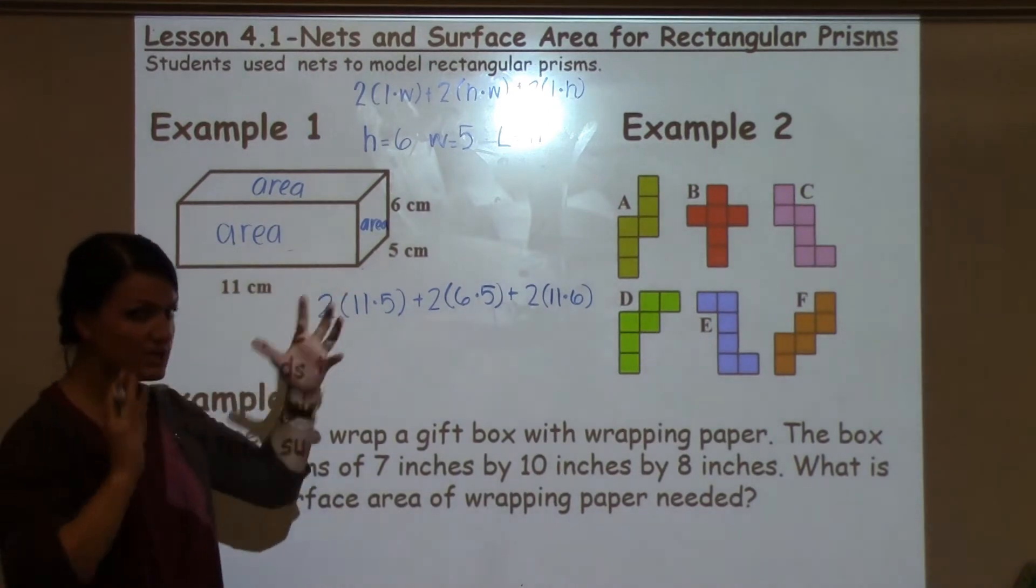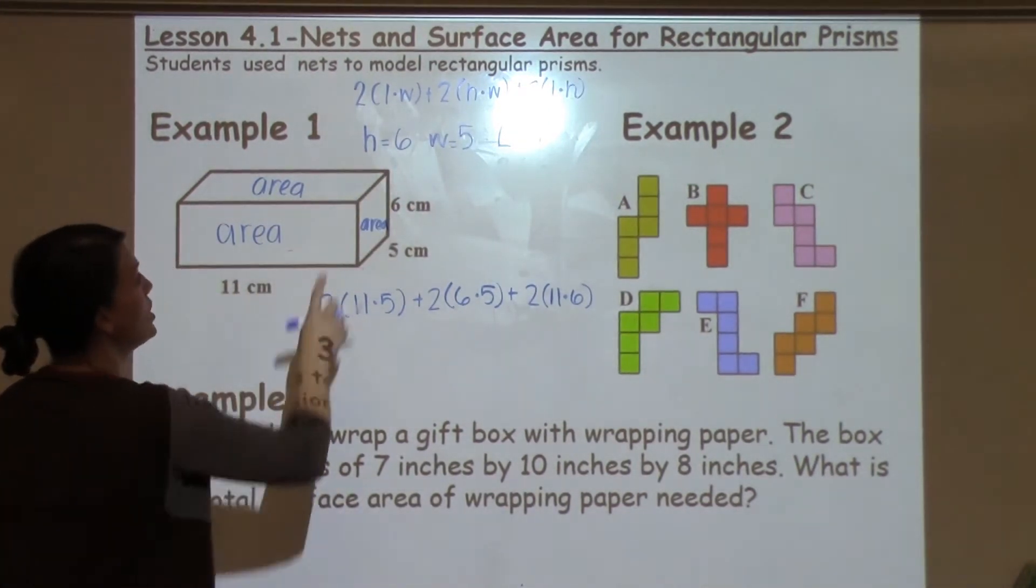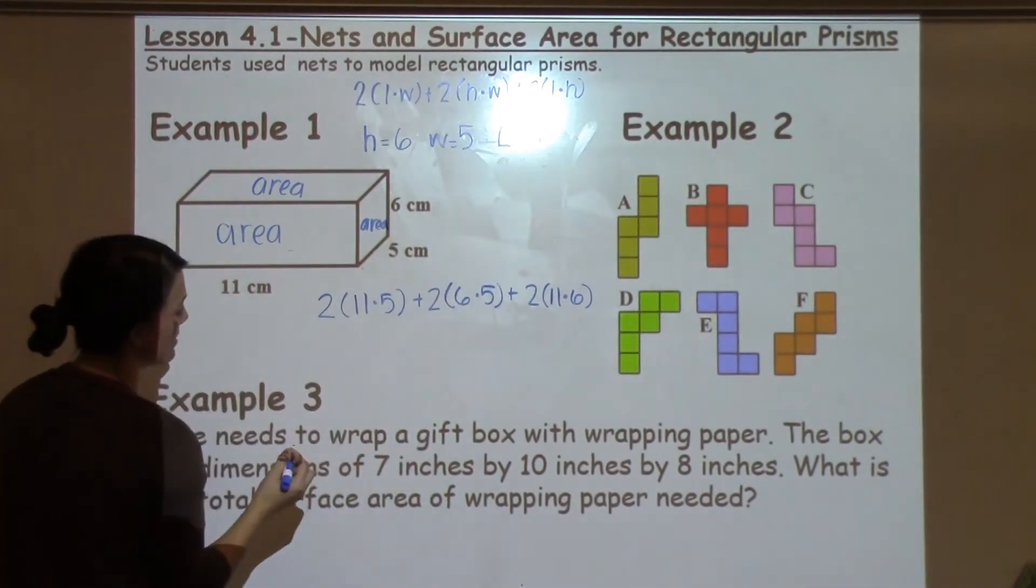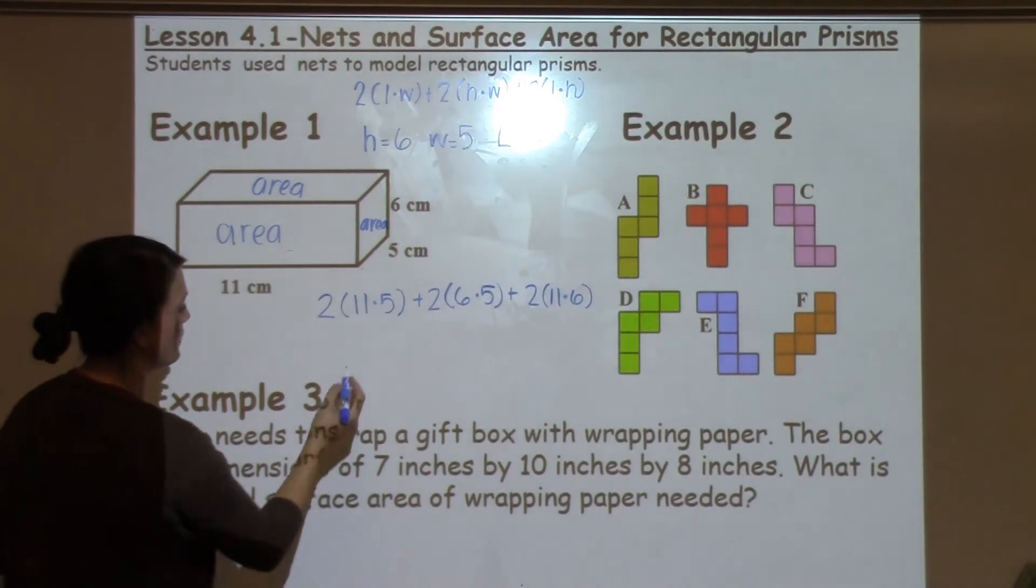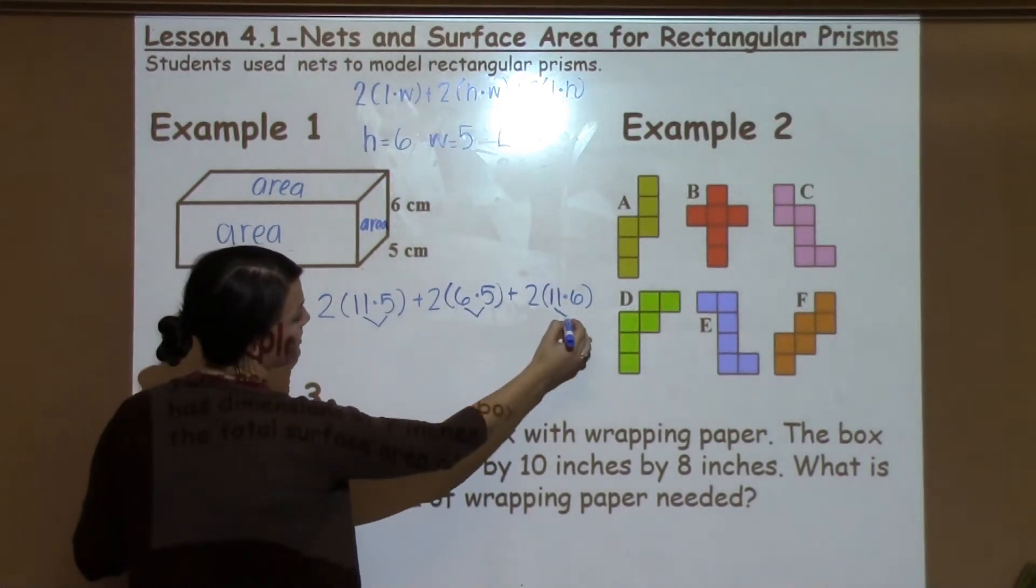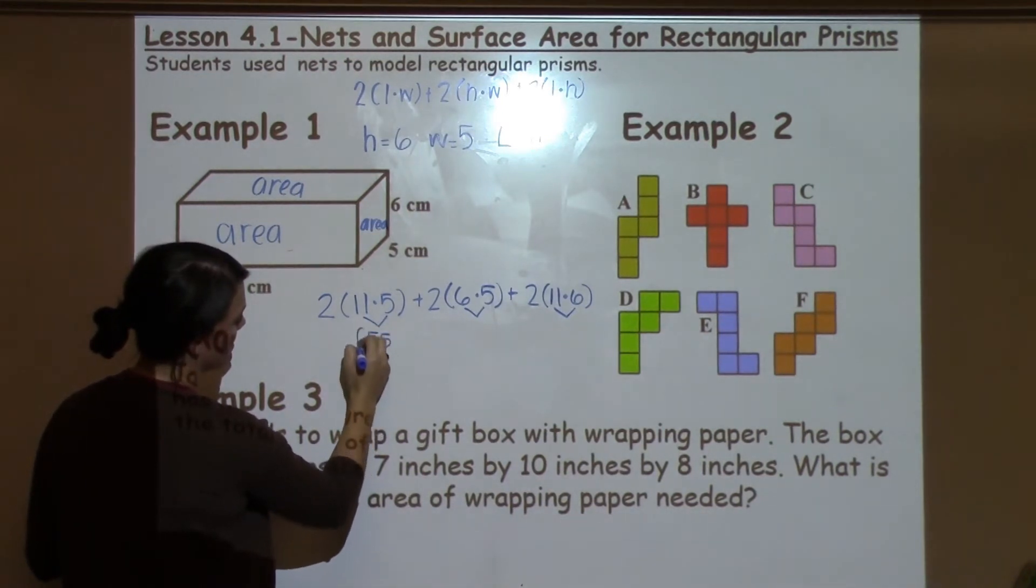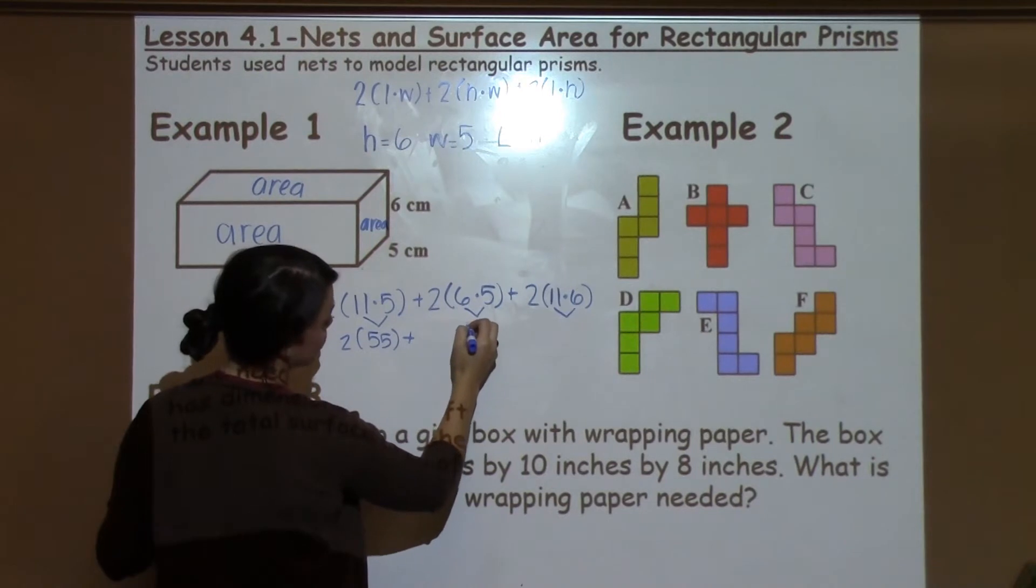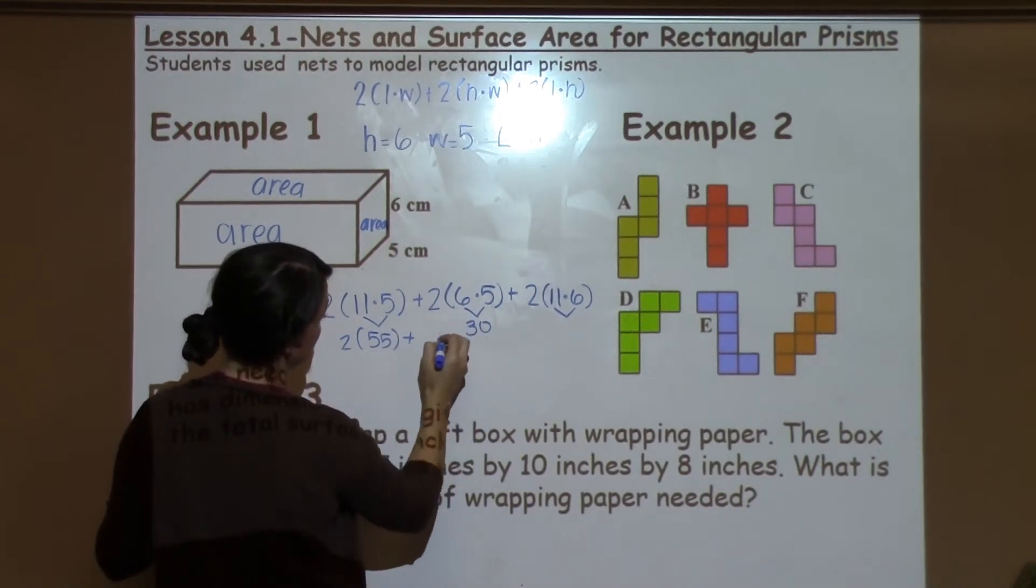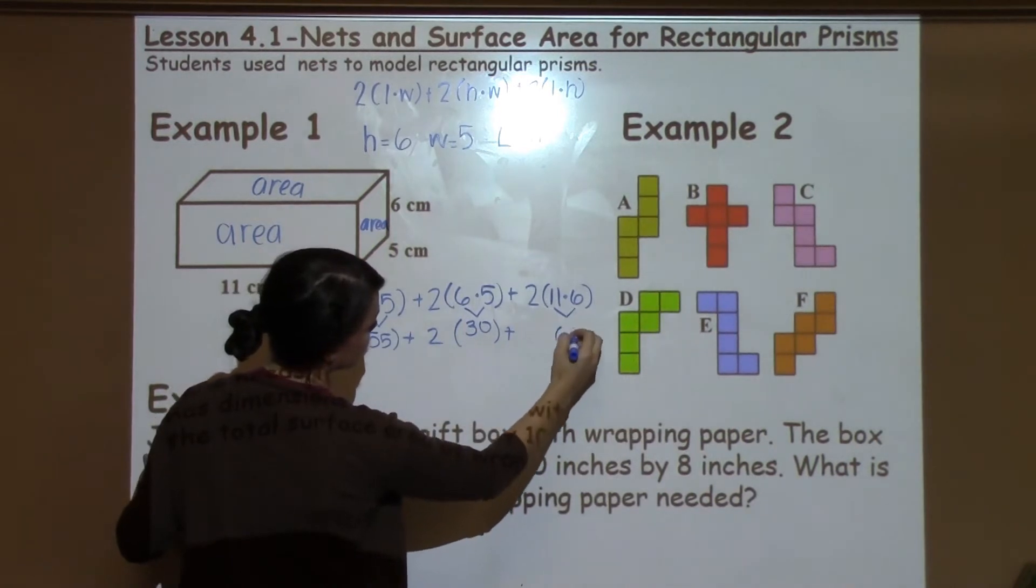Again, for students to try and just put that in on their own can get a little bit tricky, so that's why we encourage them to write out which one is which in each problem. So now we're just going to slowly but surely work our way through the formula. So I'm going to do anything that's on the inside of the parentheses first. So 11 times 5 is 55, 6 times 5 is 30, 11 times 6 is 66.